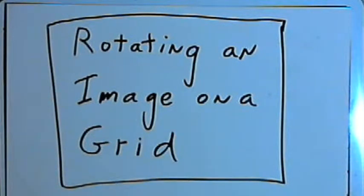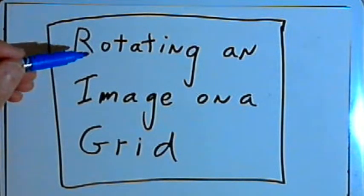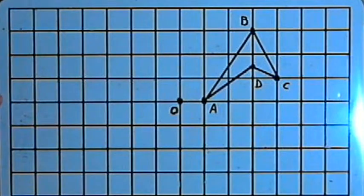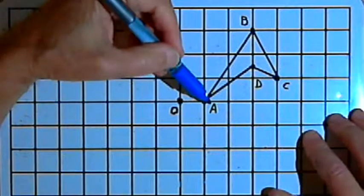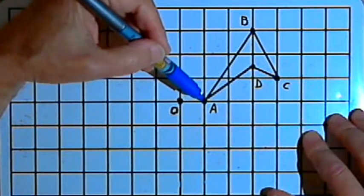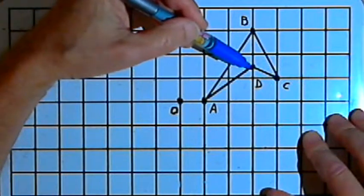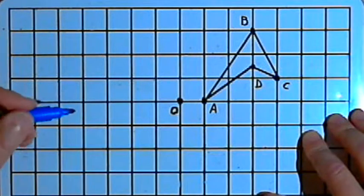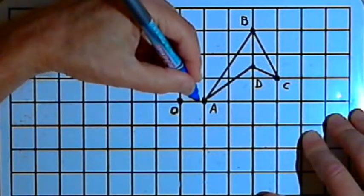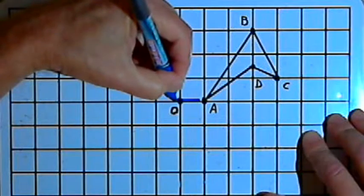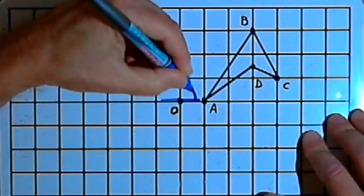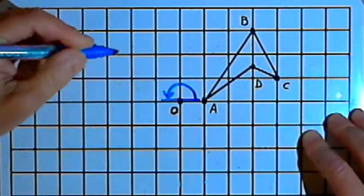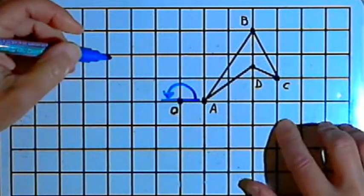This video is provided as supplementary material for courses taught at Howard Community College. In this video I'm going to demonstrate how to rotate an image on a grid. The image I'm going to rotate is this quadrilateral, labeled ABCD. I'm going to rotate it through point O, the center of rotation, twice — first with an angle of rotation of 180 degrees, and then with a 90-degree angle of rotation.